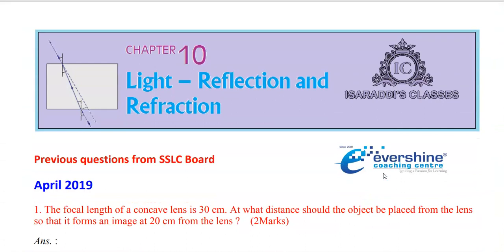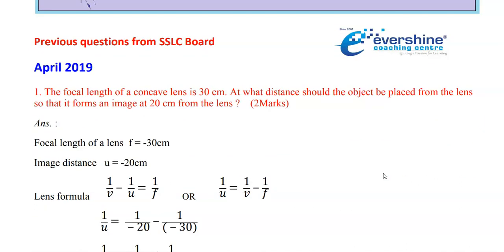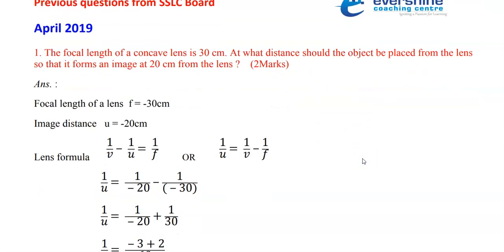Now we are coming to the chapter Light. As you can see here, first we have covered the previous year questions from the SSLC board. In April 2019, this was the question which appeared in the final board exam, so first we are covering previous exam papers. Since 2019 the syllabus has changed — the SSLC board introduced a new pattern with new concepts. Before that we were following other text contents, but right now we are following NCERT textbooks. These are the changes done from the year 2019.